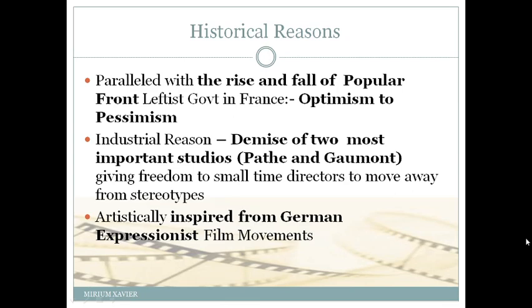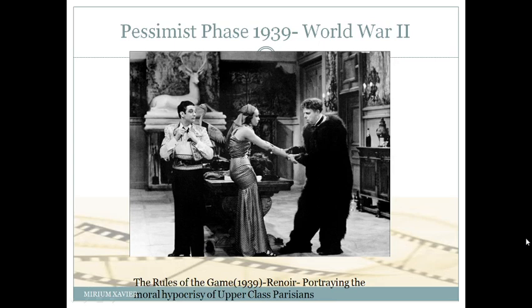French Poetic Realism was basically inspired by German Expressionist film movements. In the pessimist phase of 1939, during the World War period, films like 'The Rules of the Game' by Jean Renoir tried to portray the moral hypocrisies of upper-class Parisians.